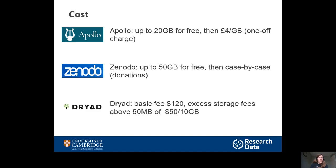You should bear in mind the cost of sharing data in a repository. In the case of Apollo here at Cambridge, datasets of less than 20 gigabytes are recorded for free, but anything above that has a one-off charge of £4 per gigabyte. Check with another repository if you choose to use a different one about their costing. At the start of a project you really should be planning all this, so you should be able to estimate roughly the size of the dataset you'll generate and therefore the cost you will incur. If you are applying for a grant, you can usually budget that in and you shouldn't be out of pocket for it.